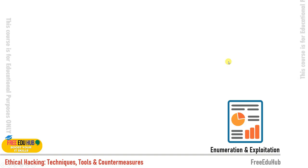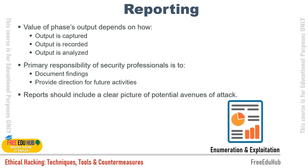Reporting is very important. The value of the phase output depends on how it is captured, recorded, and analyzed. The primary responsibility of a security professional is to document findings and provide directions for future activities — how to fix vulnerabilities and secure the network. Reports should include a clear picture of potential avenues of attack, known weaknesses, and recommended steps. It's up to the information security team to act, but the ethical hacker highlights all weaknesses.